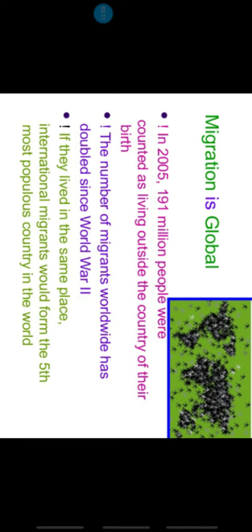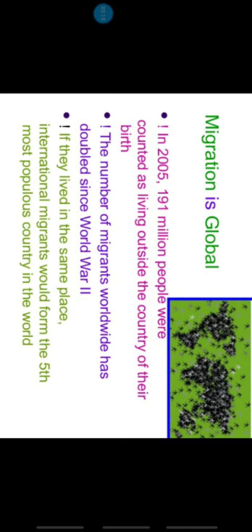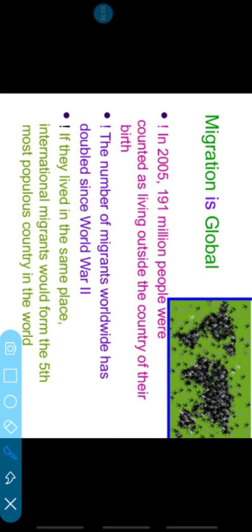So that is the definition of migration we have discussed. Now, migration is global — we cannot say migration is only in India. It is happening in the whole world. It is not only that people go from India; it is a global phenomenon. In 2005, 191 million people were accounted as living outside the country of their birth.